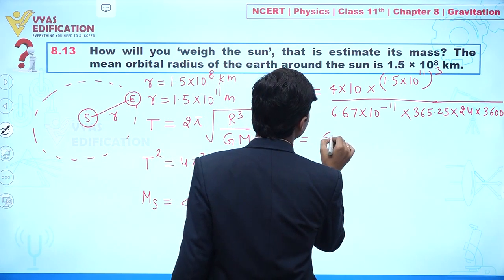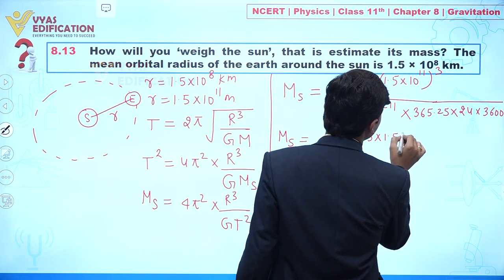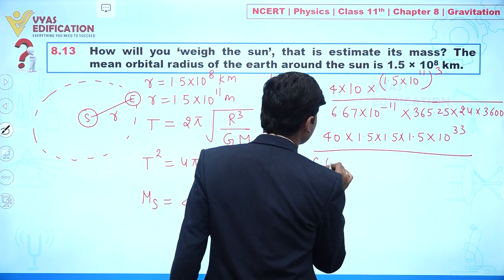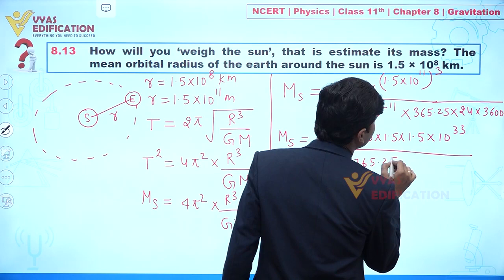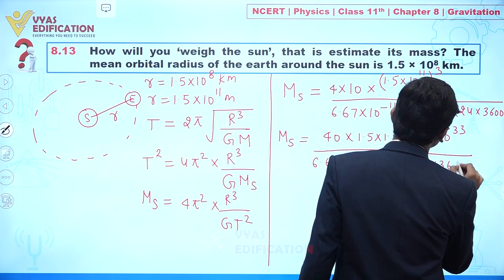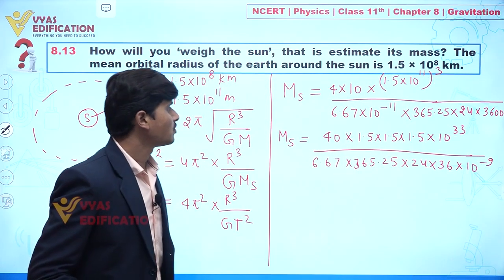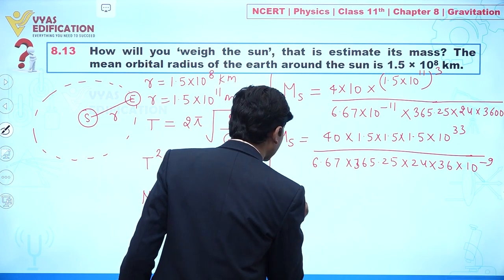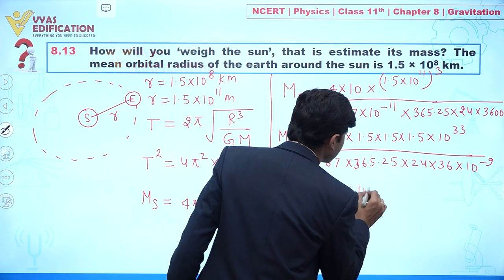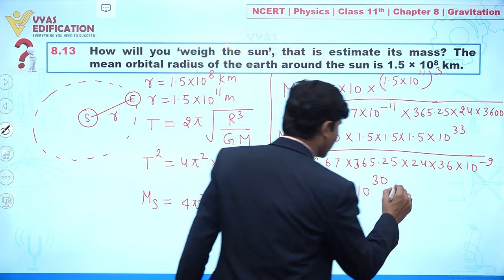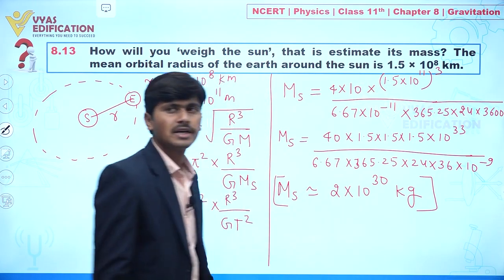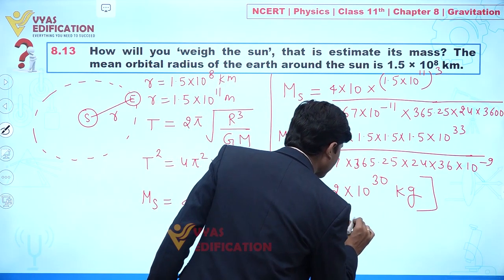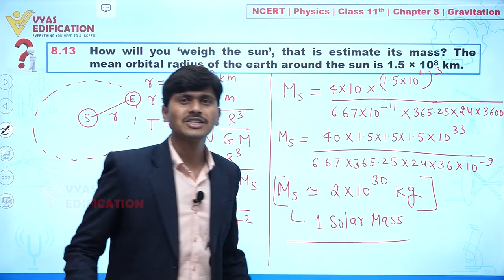After substituting and calculating all the values, the mass of the Sun comes out to approximately 2 × 10³⁰ kilograms. This value is known as one solar mass.